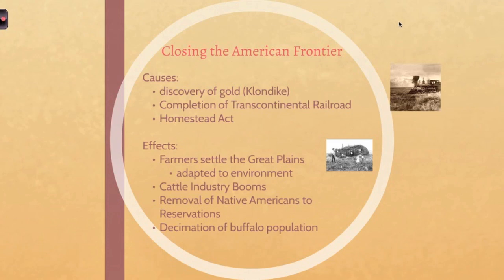During this time, the American frontier — pretty much from the Great Plains all the way west to California — is going to start closing off. Some of your major causes: you're going to have the Gold Rush in the Klondike region, also earlier in California, that's going to lead to a lot of people moving west. Probably one of the biggest things that's going to impact the closing of the frontier is going to be the completion of the Transcontinental Railroad.